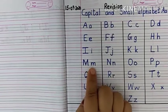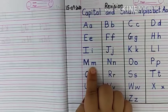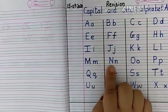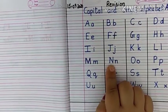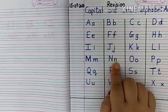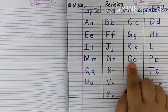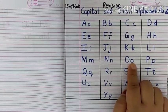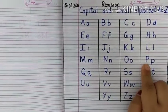Next, capital M, small m, M says M. Next, capital N, small n, N says M. Next, capital O, small o, O says O.